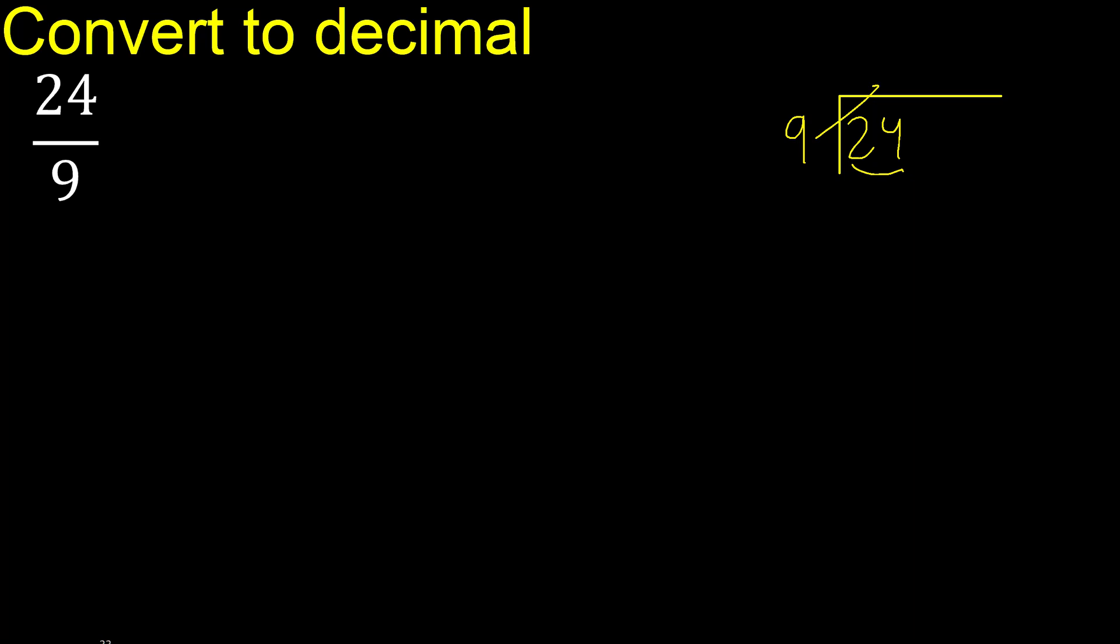9 multiplied by which number is nearest to 24 but not greater? 9 multiplied by 3 is 27. 27 is greater. Multiply by 2. 9 multiplied by 2 is 18. 18 is not greater.